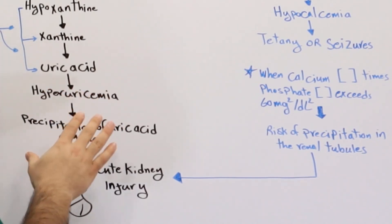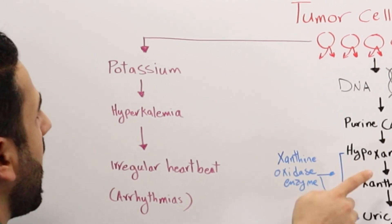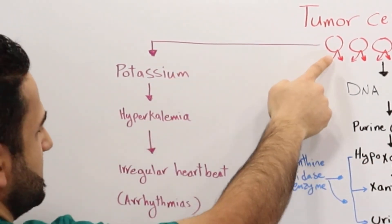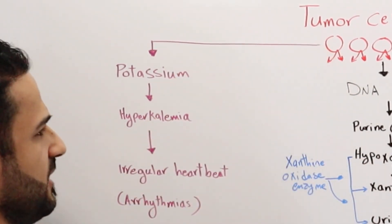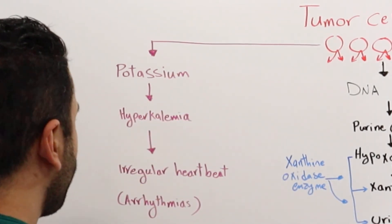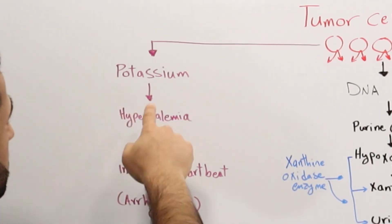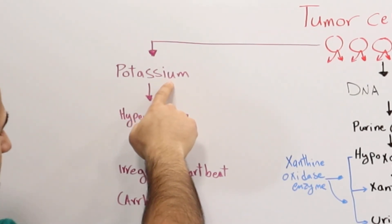The fourth thing that tumor lysis syndrome leads to is basically high amounts of potassium, because these cells also contain potassium. The role of potassium is basically what it does: it regulates the heartbeat to keep the heartbeat at pace.